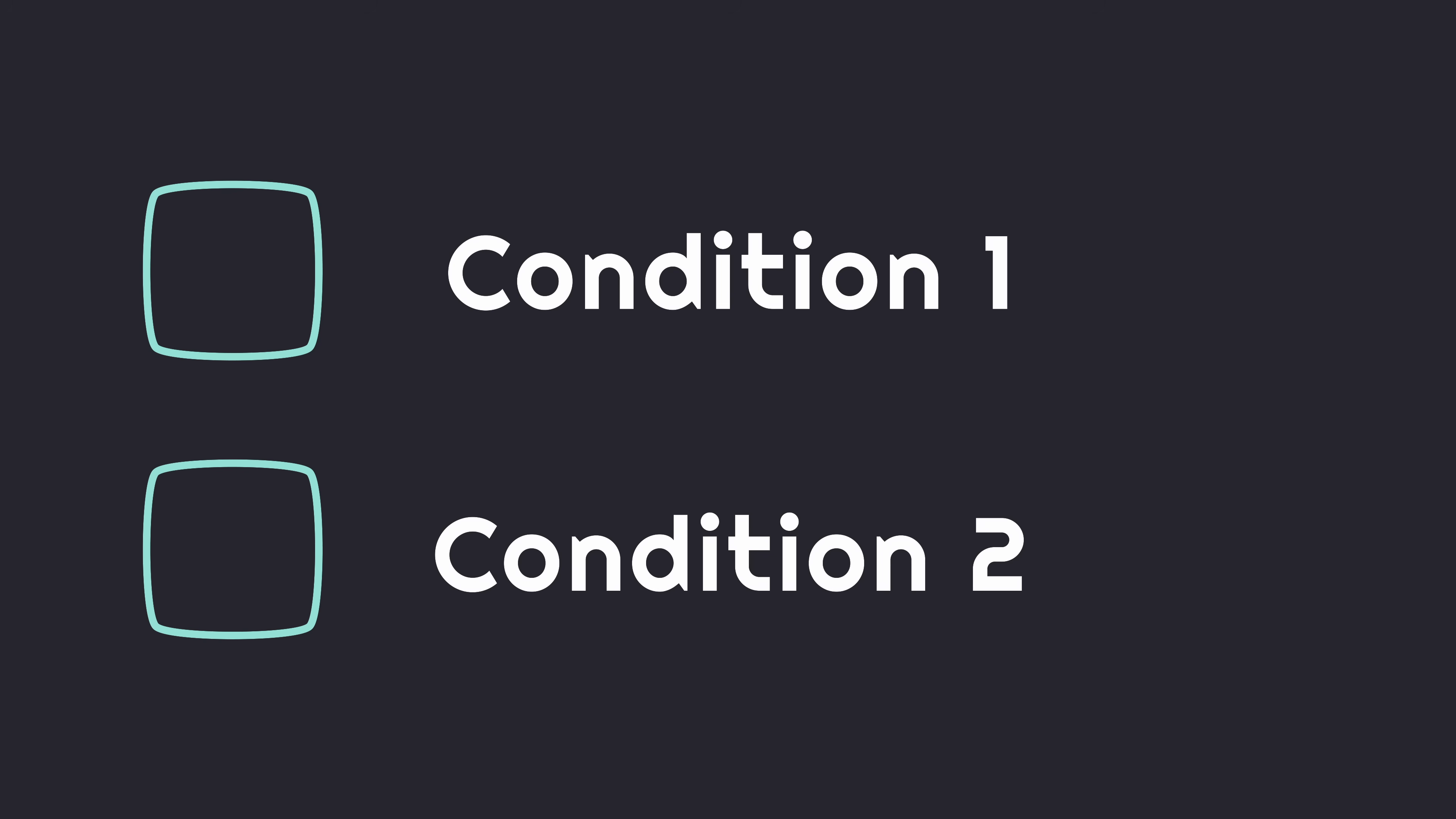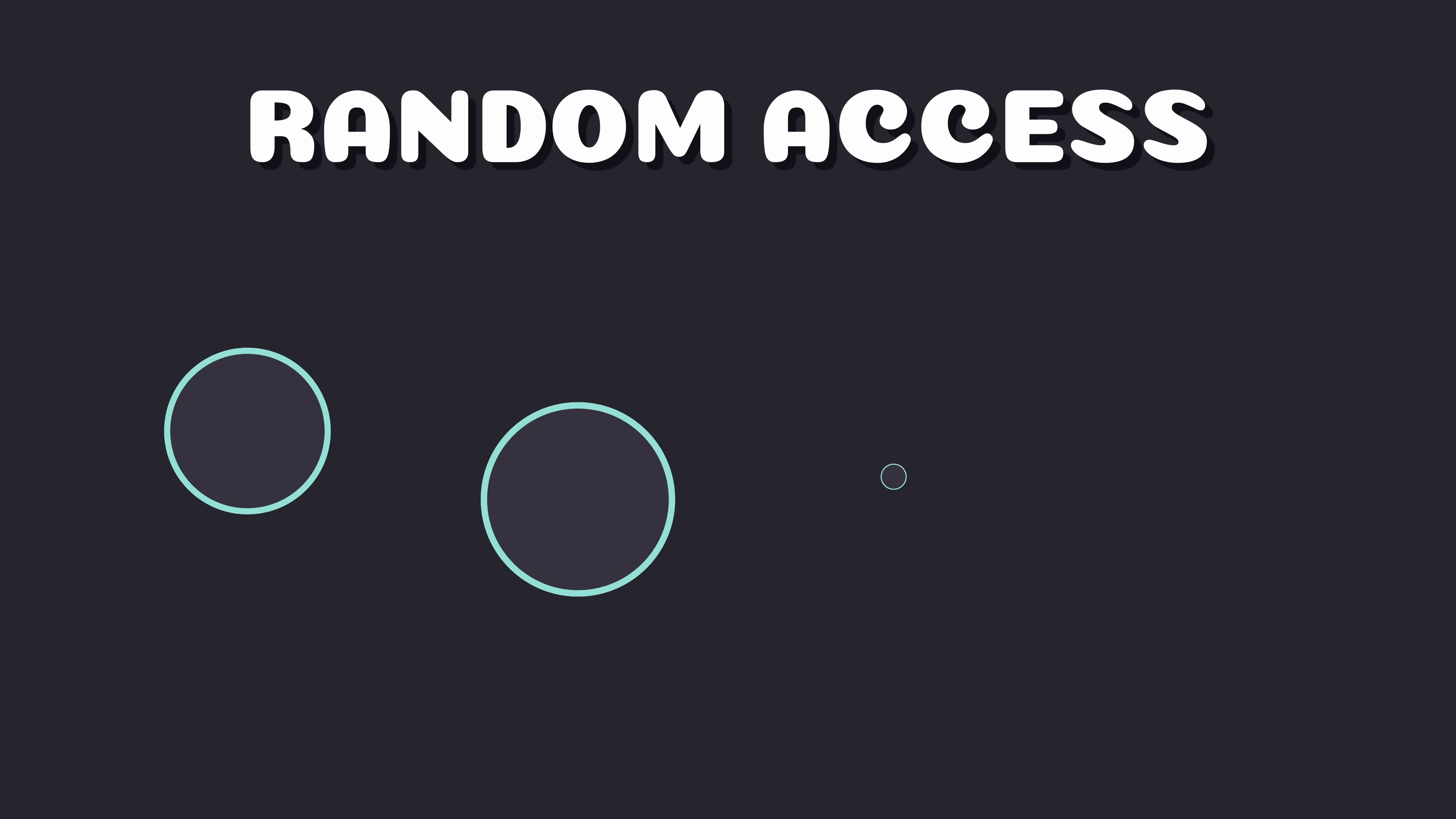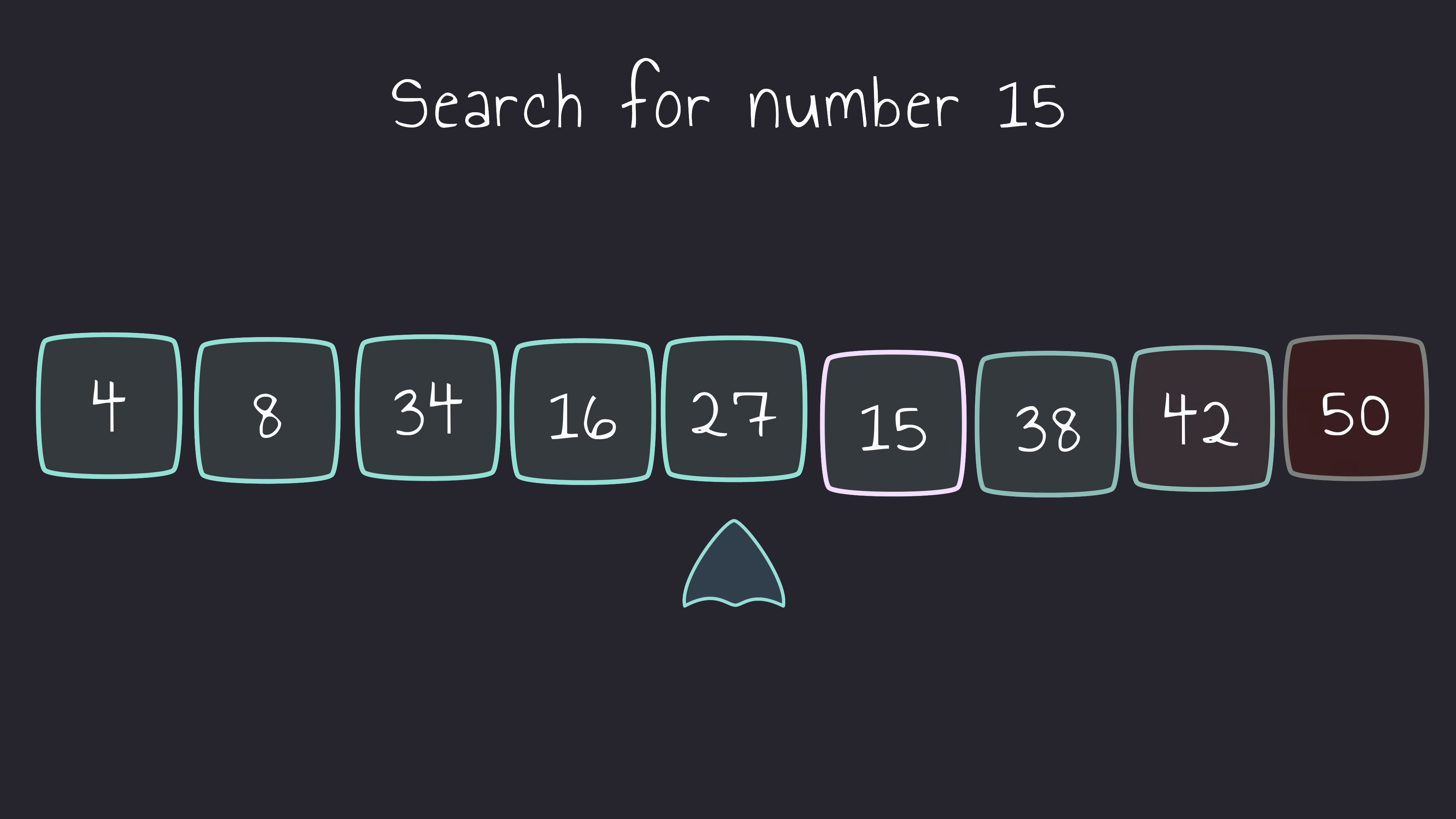In order for us to be able to use binary search, we need to meet two conditions. The first is random access, meaning that we're able to jump to any index of our collection in constant time. This is possible when using an array or a vector, but not possible in other data structures such as a linked list. The second condition, which we've already mentioned before, is that our collection of elements needs to be sorted. If the array we're given isn't sorted, then we're no longer able to perform binary search on it, and the algorithm will fall apart.